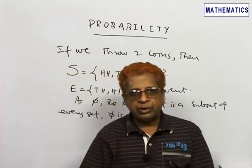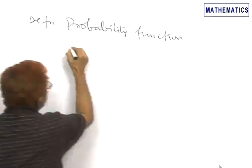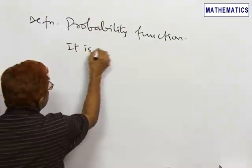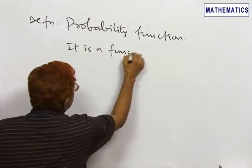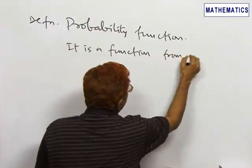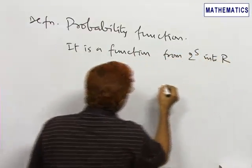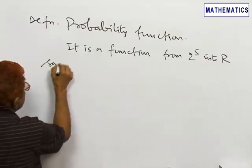Now, we are going to define what is meant by probability function. It is a function from 2^S into R satisfying